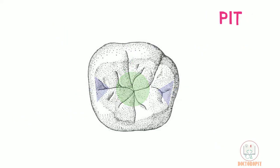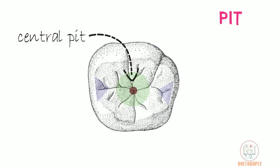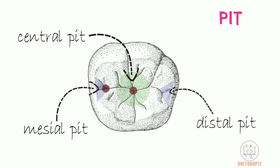There are three pits. The central pit is seen at the bottom of the central fossa; it is the junction of the central, lingual, and mesial buccal developmental grooves. The mesial pit is present in the mesial triangular fossa, and the distal pit is in the distal triangular fossa.